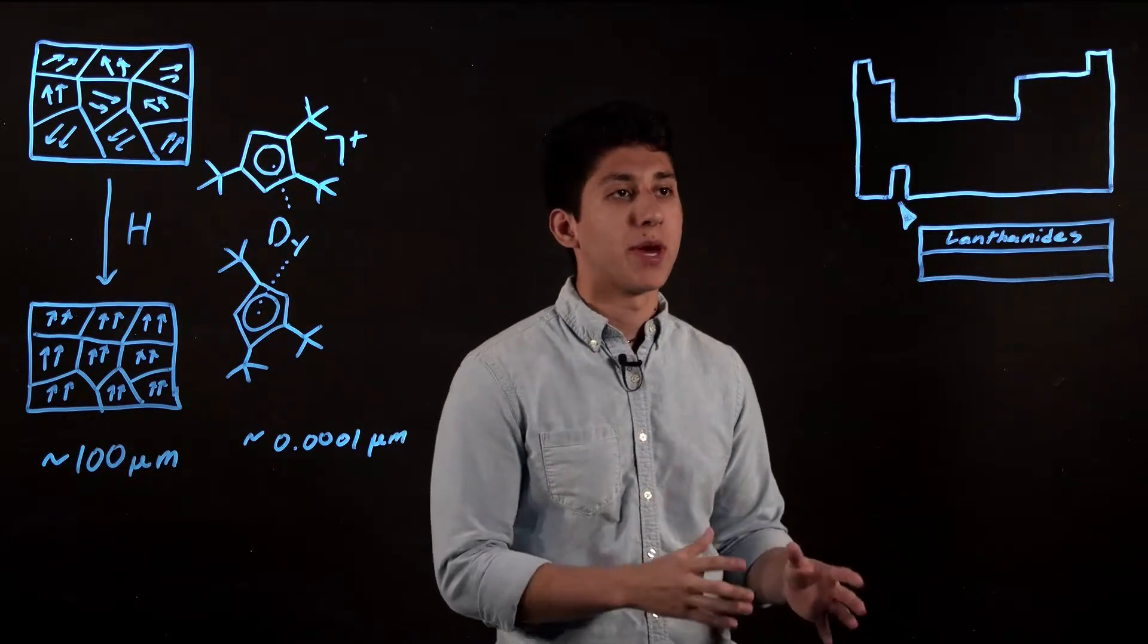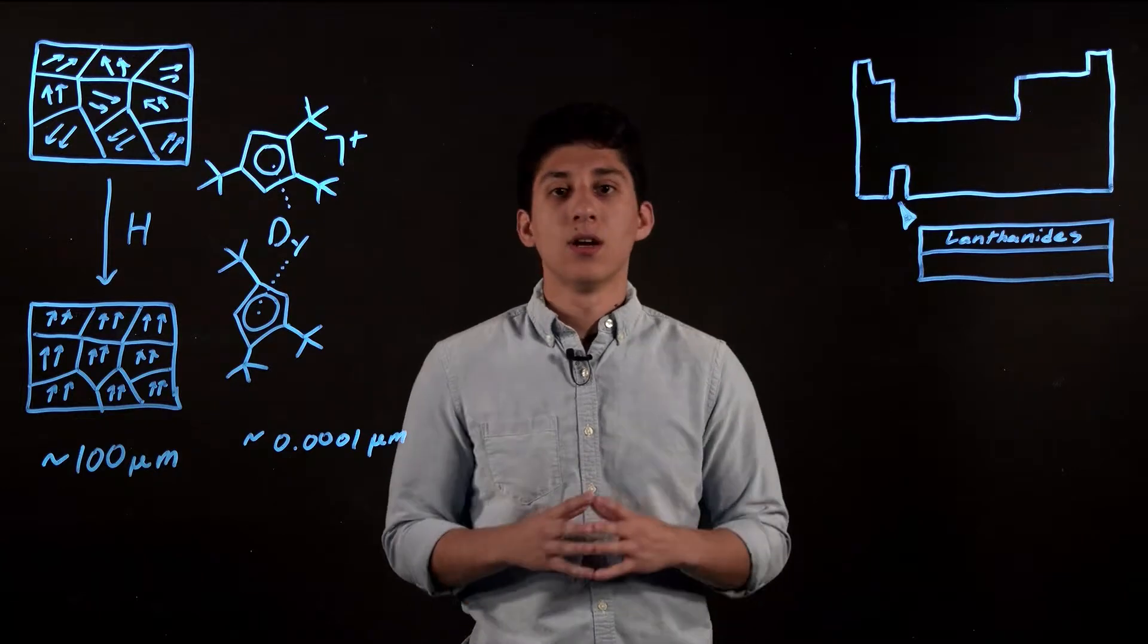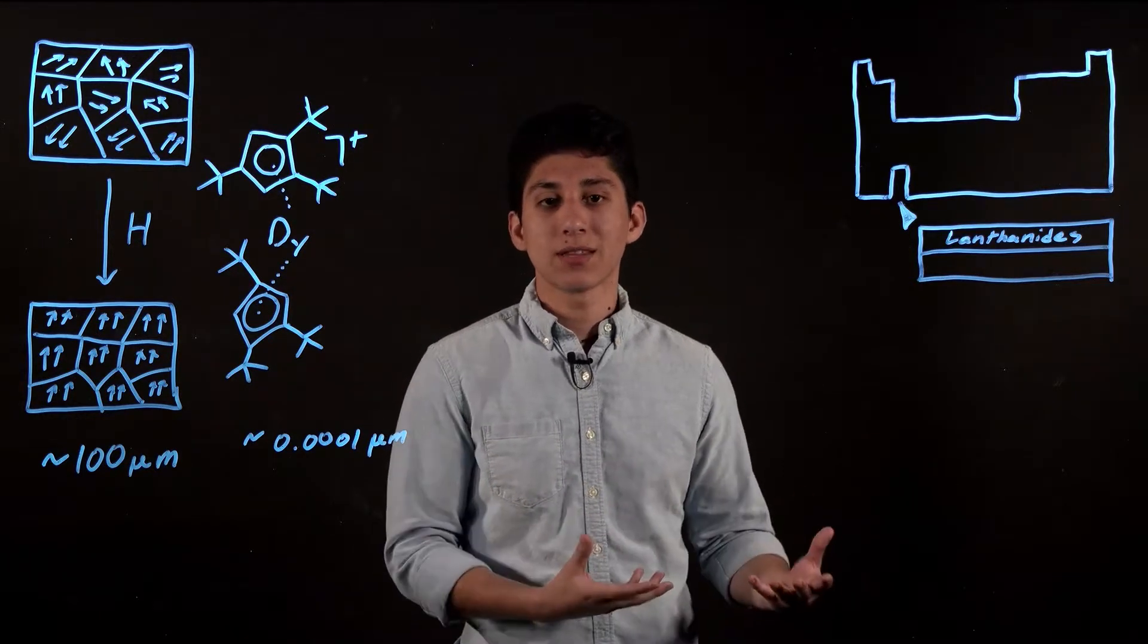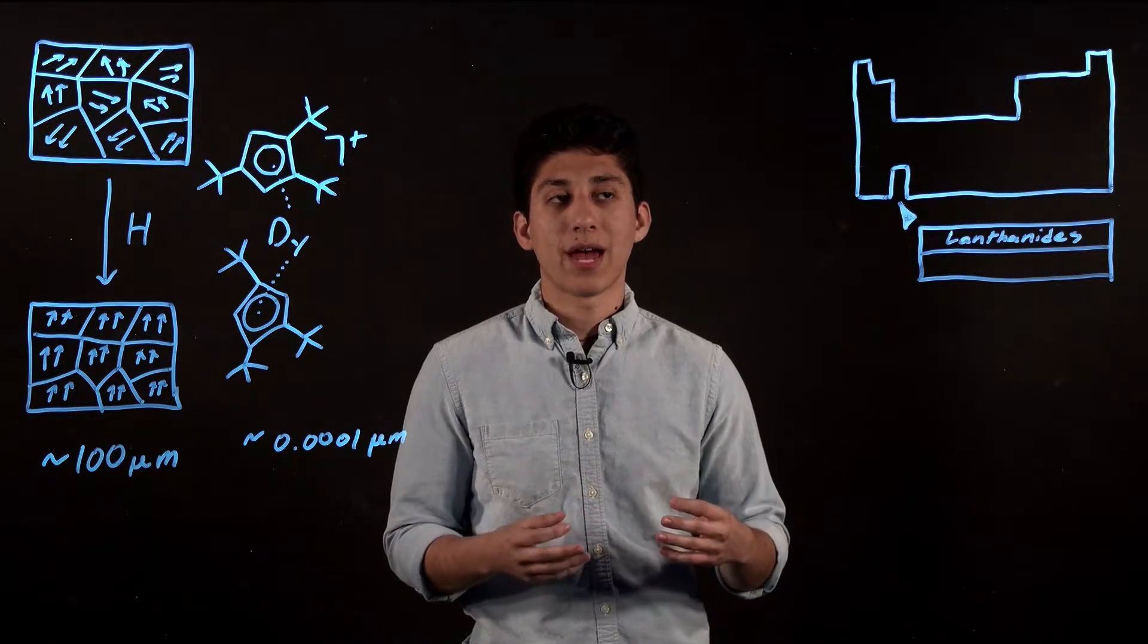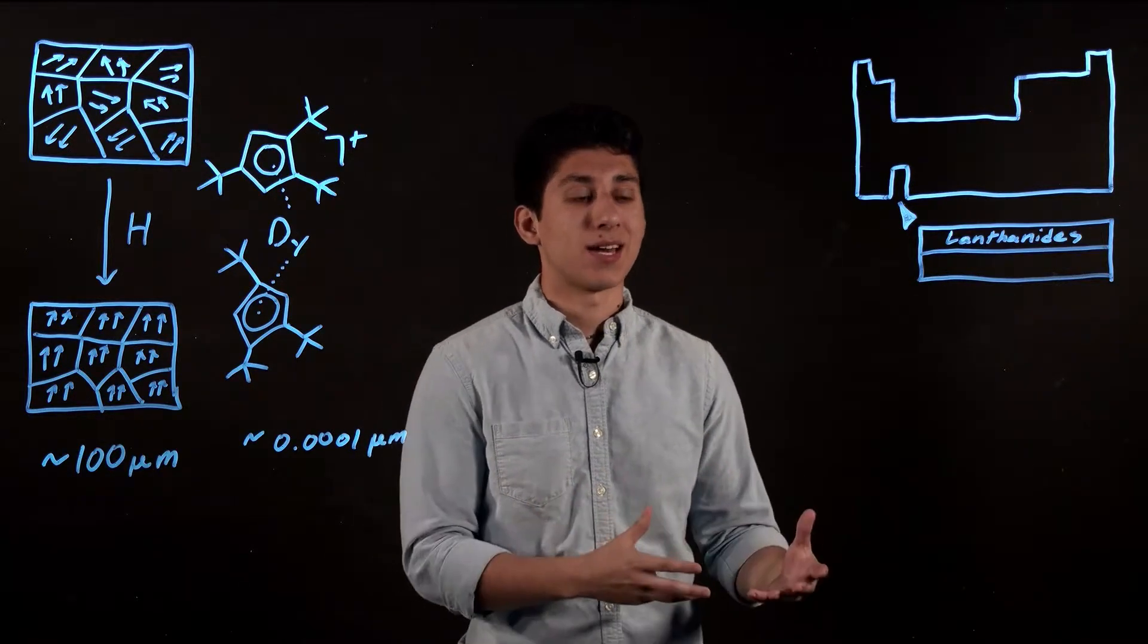Lanthanides are considered rare earth metals, while transition metals are not, but this is actually a misnomer. It's not due to the rarity of the lanthanide. It's actually based on the fact that lanthanides can't be found in their metallic state in nature. Rather, they're found as oxides.